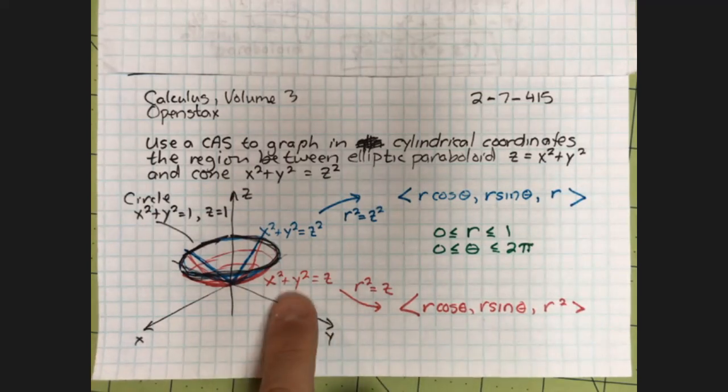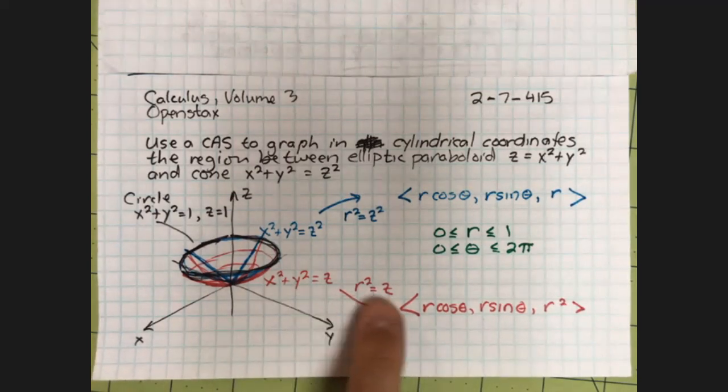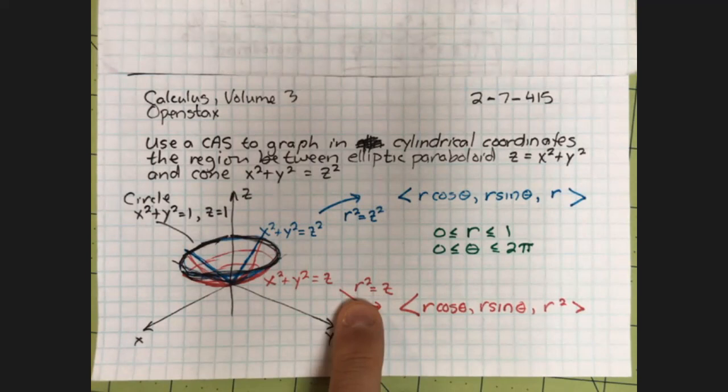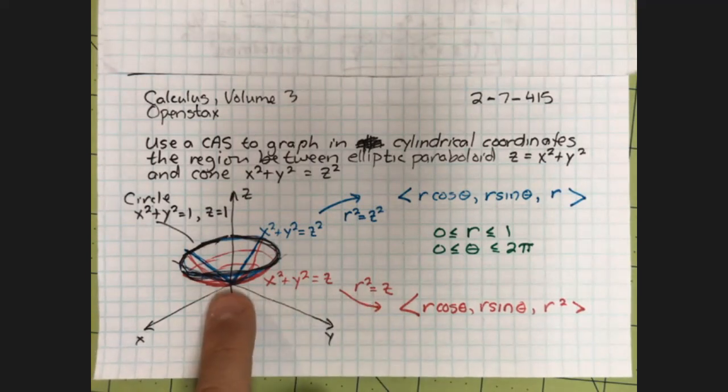You could say x squared plus y squared is r squared. You could call this paraboloid z equals r squared in cylindrical coordinates. I tried to draw this in red here, generally like a little bowl.